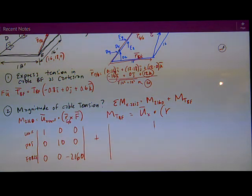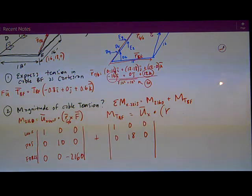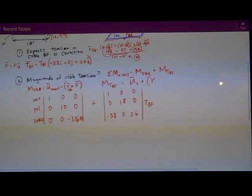I've got 1, 0, 0 on the top. I've got 0, 18, and 0 in the middle row for the position vector. And my force vector on the bottom is just these components that I figured in part 1: negative 0.8, 0, and 0.6. Everything is times TBF.